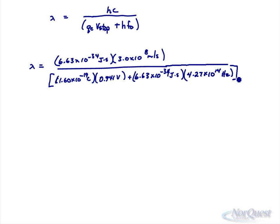Bracket that whole denominator. 1.6 to the exponent negative 19 times 0.941 plus 6.63 to the exponent negative 34 times 4.27 to the exponent 14. Close the bracket. Make sure you bracket the entire denominator. The calculator knows order of operations to do the multiplication, then the addition, but you do have to bracket the entire denominator. What you should get as an answer here: